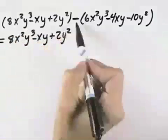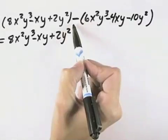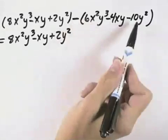With the second polynomial, we have a negative in front, a subtraction sign, so we need to distribute that through each of our three terms.